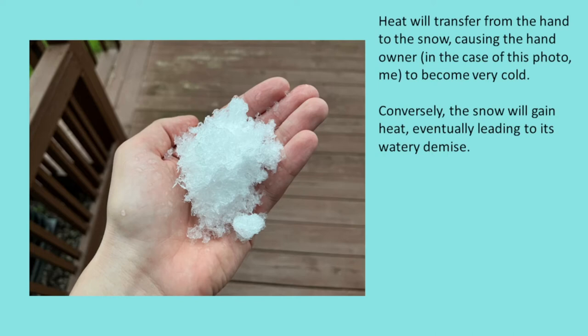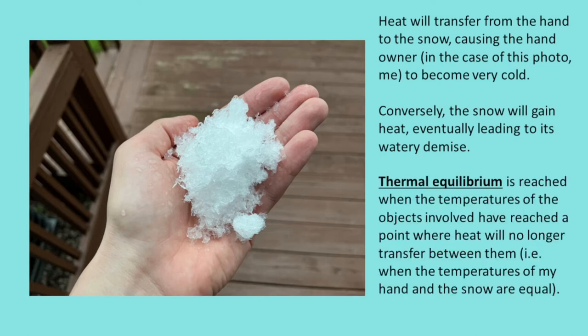Heat is leaving your hands, causing them to feel colder, and entering the snow, warming it up and melting it. As the temperature of your hand lowers, the temperature of the snow increases, and the two temperatures approach each other until a point is reached where the temperatures are roughly equal and heat won't transfer anymore. When this point occurs, the system has reached a state called thermal equilibrium. The word thermal comes from the Greek word for heat.